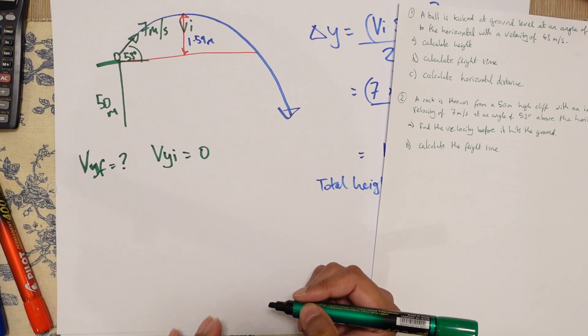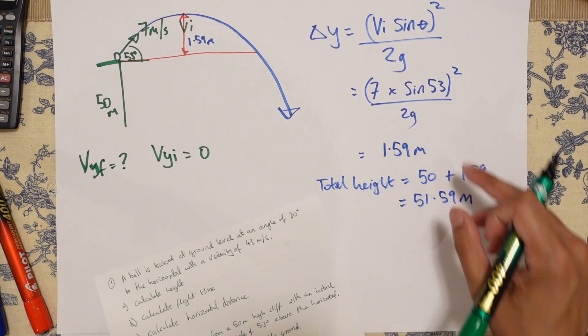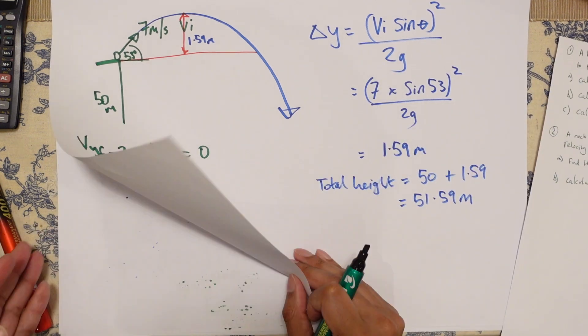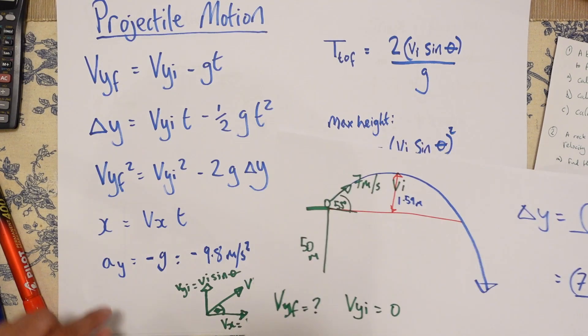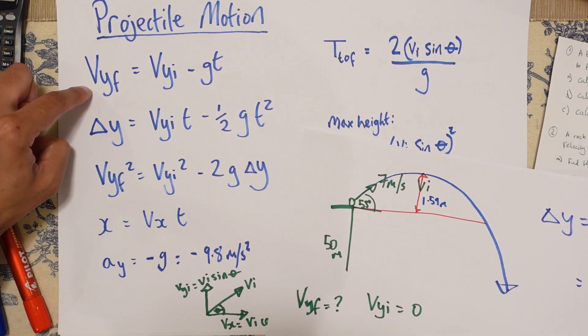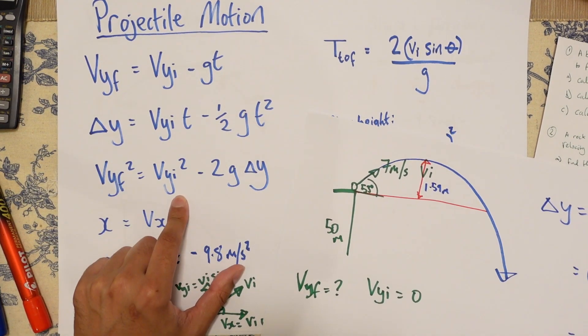We don't know the time. And we know G. So let's see if we can get an equation out here. So we want to work out VYF. We can't use that one because we don't have the time. Can't use this one because we don't have the time.